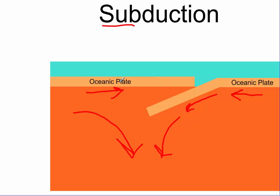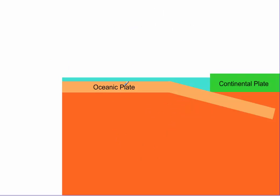Subduction can occur between two oceanic plates or an oceanic plate and a continental plate. Convection currents in the asthenosphere drive this movement, pulling the oceanic plate underneath the continental plate.